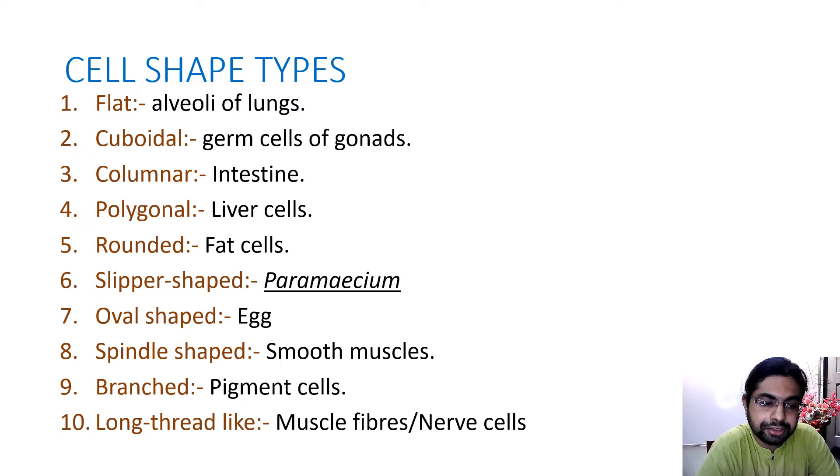Cell shape types: the cells are of different types. It can be flat, cuboidal, columnar, polygonal, rounded, slipper-shaped, oval-shaped, spindle-shaped, branched, thread-like.